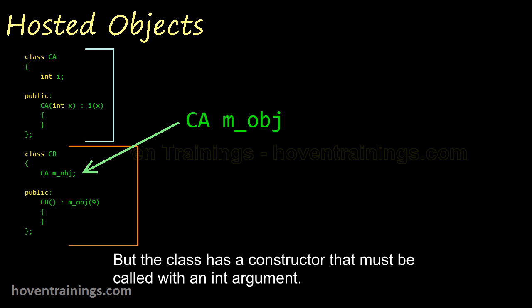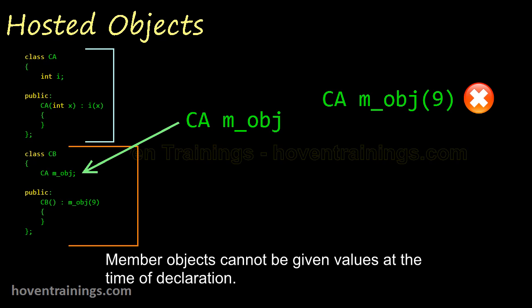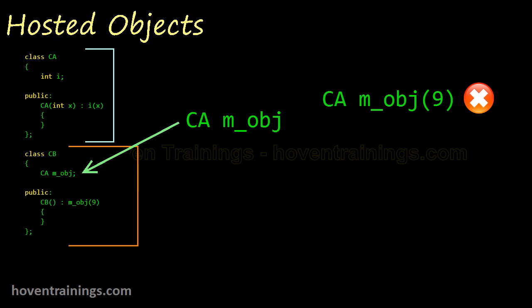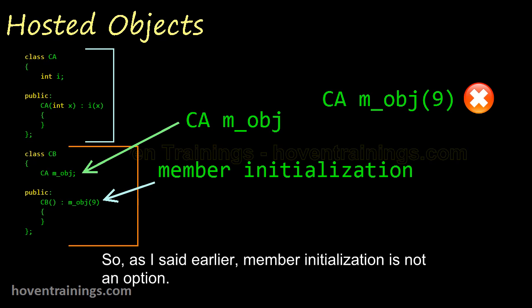But the class has a constructor that must be called with an int argument. The question is, how to call that constructor? This is not allowed in C++. Member objects cannot be given values at the time of declaration. The only way out is to use the member initialization like this. So, as I said earlier, member initialization is not an option. In some cases it is indispensable. It's the only way out.